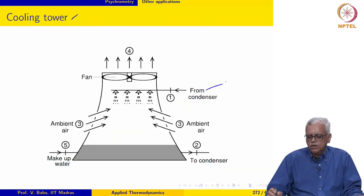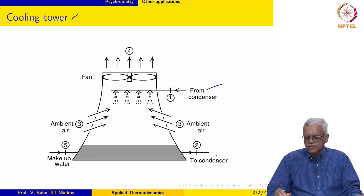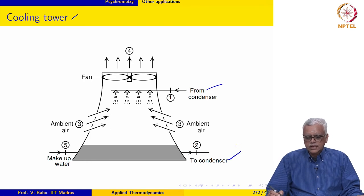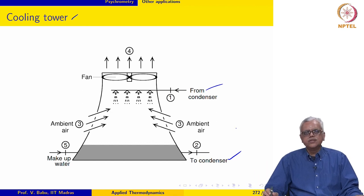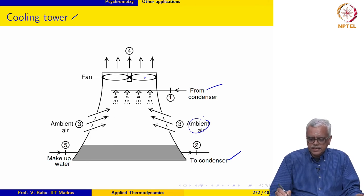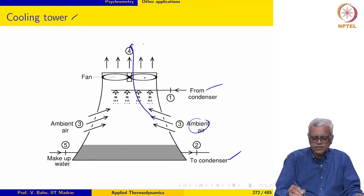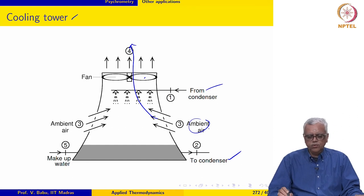The basic purpose of the cooling tower is to take water at 60 degrees Celsius, cool it to 30 degrees Celsius, and return it to the condenser. Hot water from the condenser enters the top of the cooling tower and cooled water is returned back to the condenser.